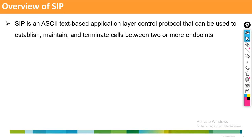ASCII text-based means SIP is a clear text protocol. Contrast this with H.323, which uses hexadecimal format — any log of H.323 comes in hexadecimal. SIP logs come in clear text. SIP protocol works in the application layer of the OSI model.